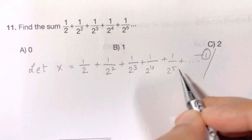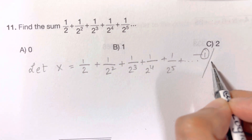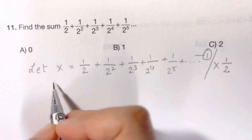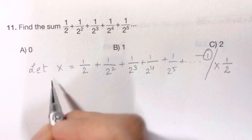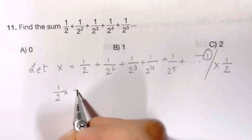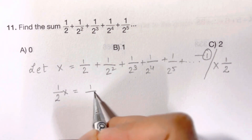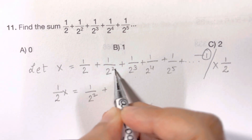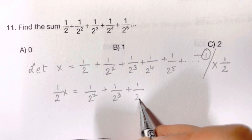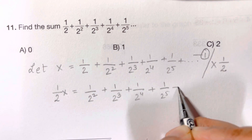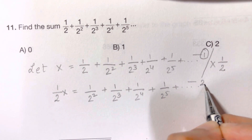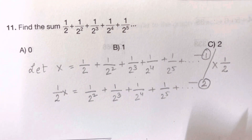After this, we're going to multiply both sides by one half — left hand side as well as right hand side. So when you multiply half with x it becomes half x, equal to: multiply half with half it becomes one over two squared, then one over two cubed, one over two raised to four, one over two raised to five, and it goes on and on. Let this be equation two.